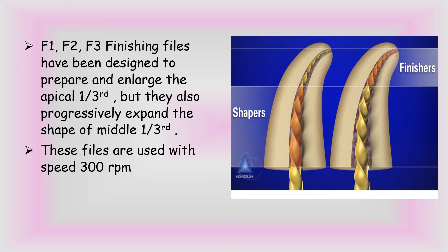After finishing shaping of the coronal two-thirds using the shaper files, we proceed to the apical one-third, which we prepare using the finishers: F1, F2, or F3. These finishing files are designed to prepare and enlarge the apical one-third of the canal, while simultaneously progressively expanding and shaping the middle one-third. In this way, we create a smooth, tapering, funnel-shaped root canal. Generally, only F1 is required, but sometimes F2 or F3 may be needed, depending on canal curvature and the cross-sectional diameter of the root canal.